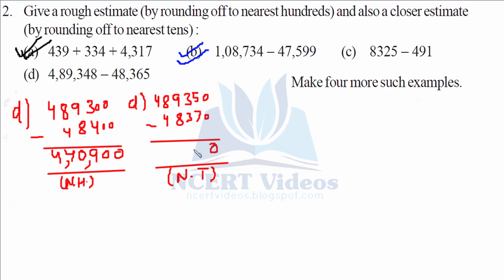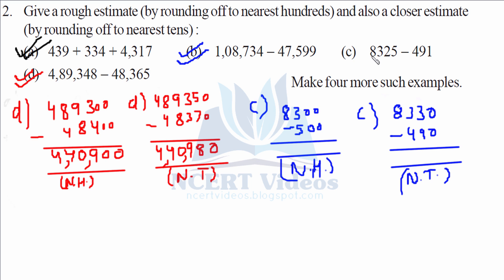For nearest tens: fifteen minus seven is eight, giving forty thousand nine hundred eighty. For part C continued: eight thousand three hundred minus five hundred (nearest hundreds) and eight thousand eight thirty minus four ninety (nearest tens). That gives seven thousand eight hundred, and seven thousand eight hundred forty respectively. That completes question two.